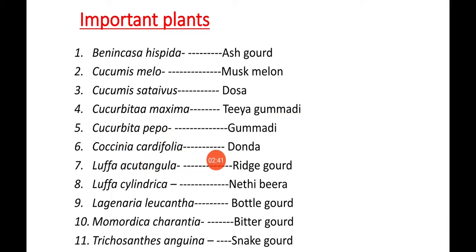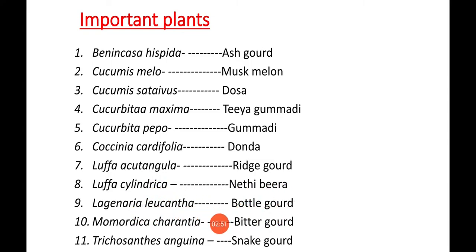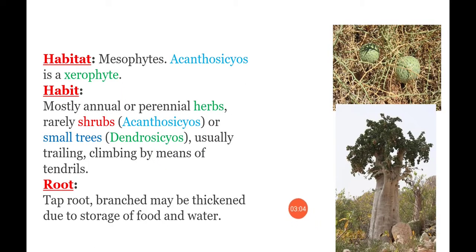Other important plants include Coccinia cordifolia, a gourd; Luffa acutangula, ridge gourd; Luffa cylindrica, smooth gourd; Lagenaria leucantha, bottle gourd; Momordica charantia, bitter gourd; and Trichosanthus anguina, snake gourd. These are some important plants belonging to the Cucurbitaceae family.